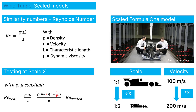In those cases, you can work with scaled models. But keep in mind that in order to achieve the same flow pattern, you need to match several similarity numbers. The most important one is the Reynolds number. If you want to keep the Reynolds number the same when scaling down your application, it basically comes down to the fact that if you scale down the object size by factor x, you actually need to scale up the wind speed by the same factor x.